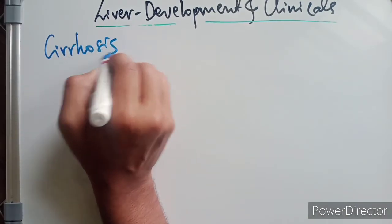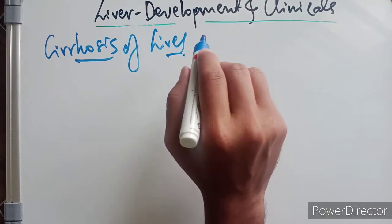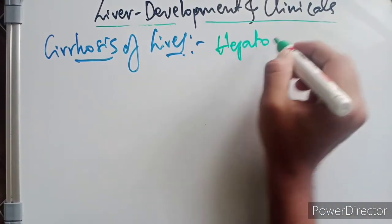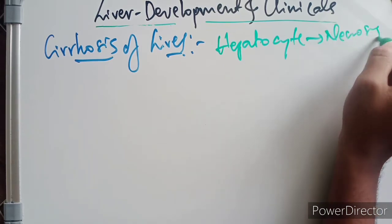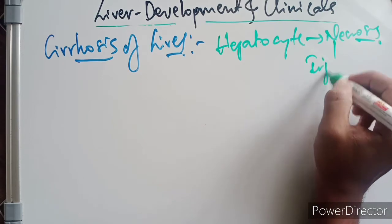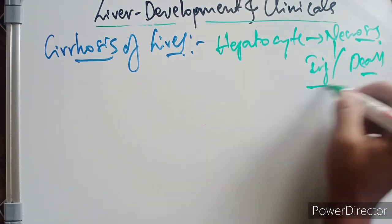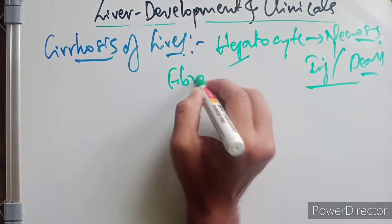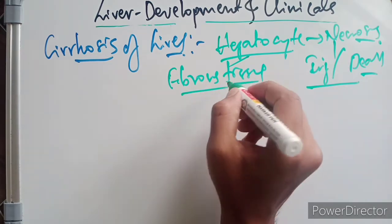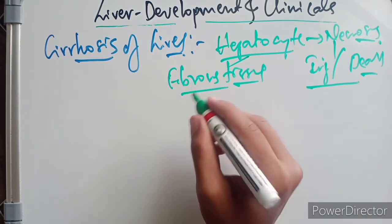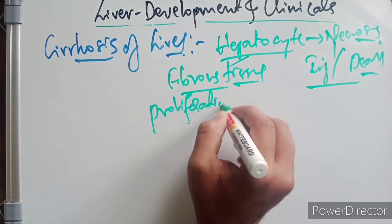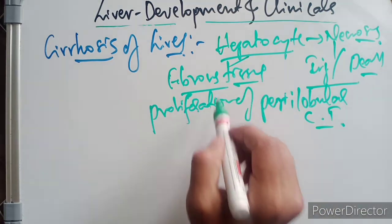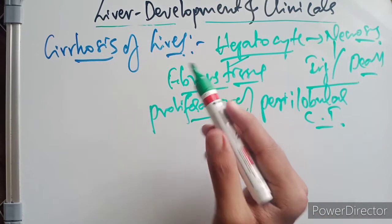In cirrhosis of the liver, hepatocytes may undergo necrosis following injury or death, which may be caused by infection, toxins, alcohol, or poisons. The dead hepatocytes are replaced by fibrous tissue through the proliferation of the perilobular connective tissue.